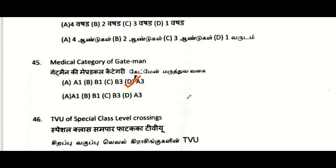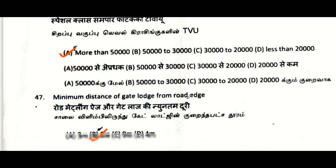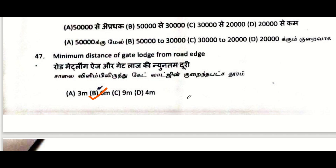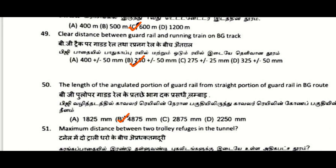Medical category of gatemen: A3. TV of a special class level crossing: more than 50,000. Minimum distance of gate from road edge: 6 meters. Distance of first detonator placed from the level crossing gate: 600 meters.